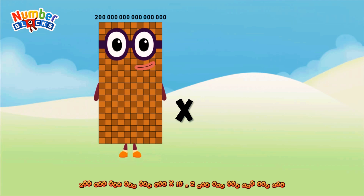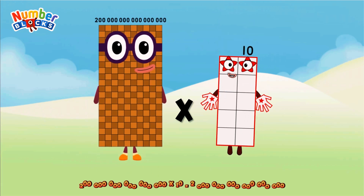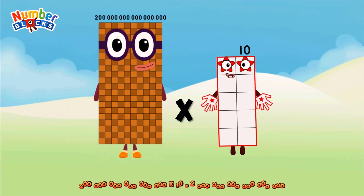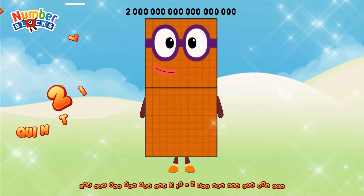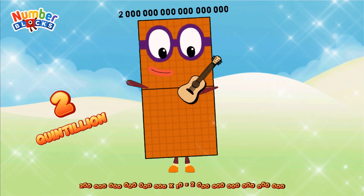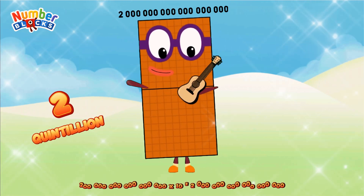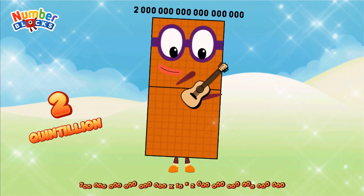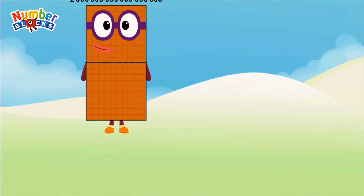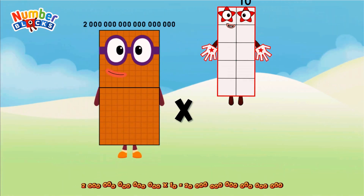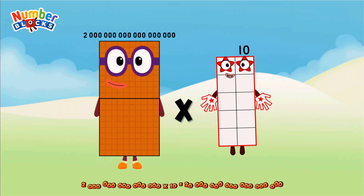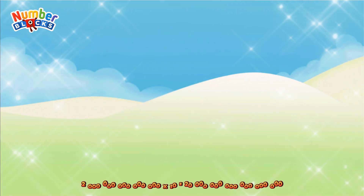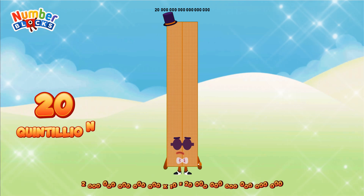Two hundred quadrillion, multiplied by ten, equals two quintillion. Two quintillion, multiplied by ten, equals twenty quintillion.